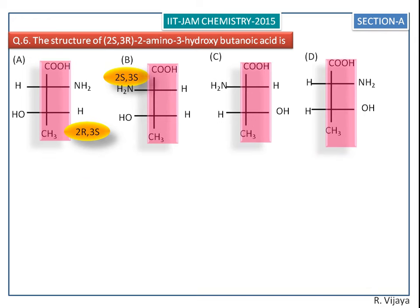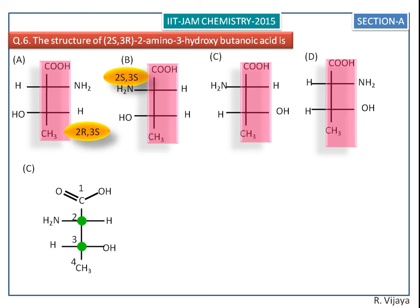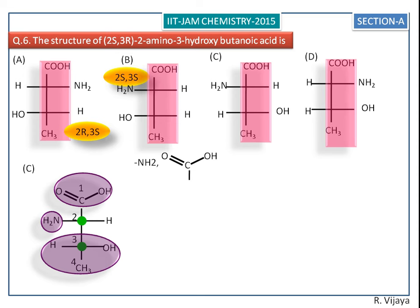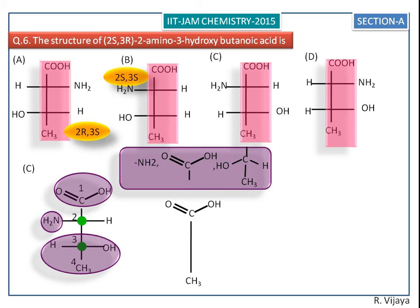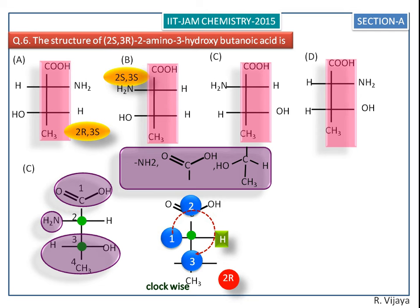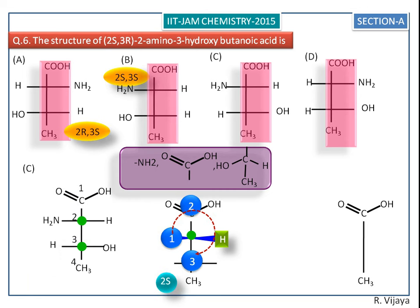So we go to the C structure. We assign the RS configuration for the second chiral center. The higher priorities rotate in a clockwise direction, so it is supposed to be 2R, but it is not, because the least priority is towards the observer, so we change R into S.